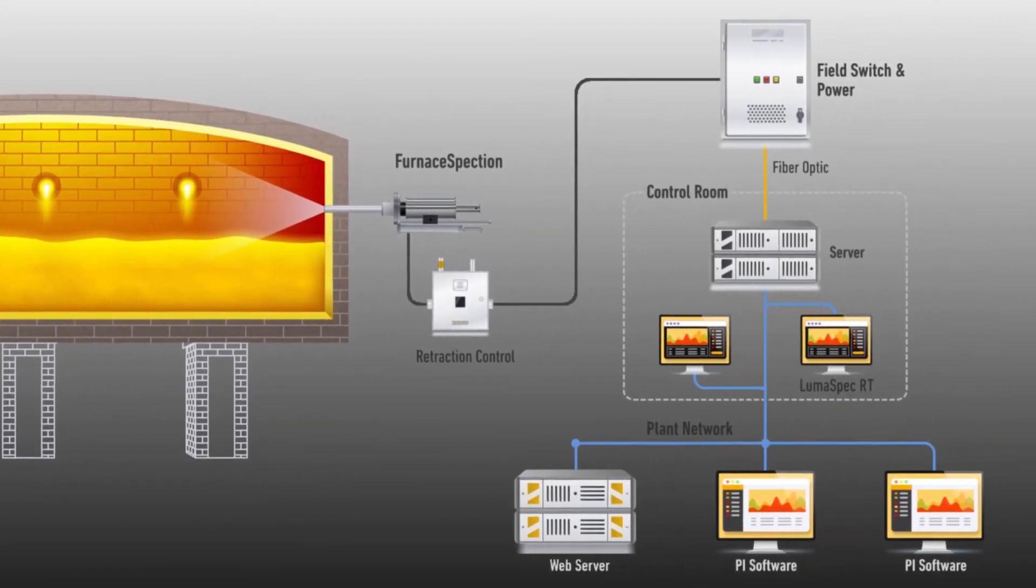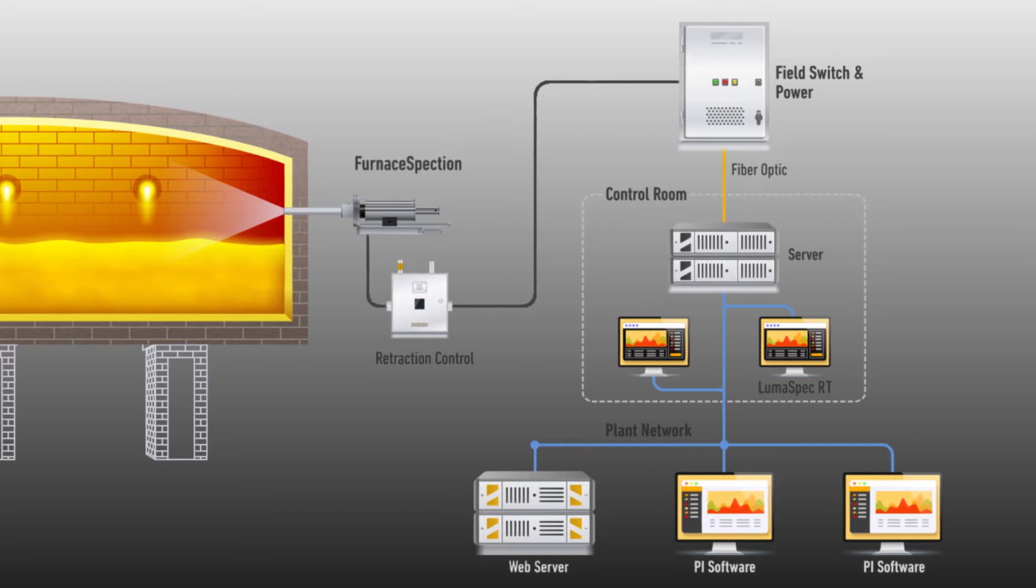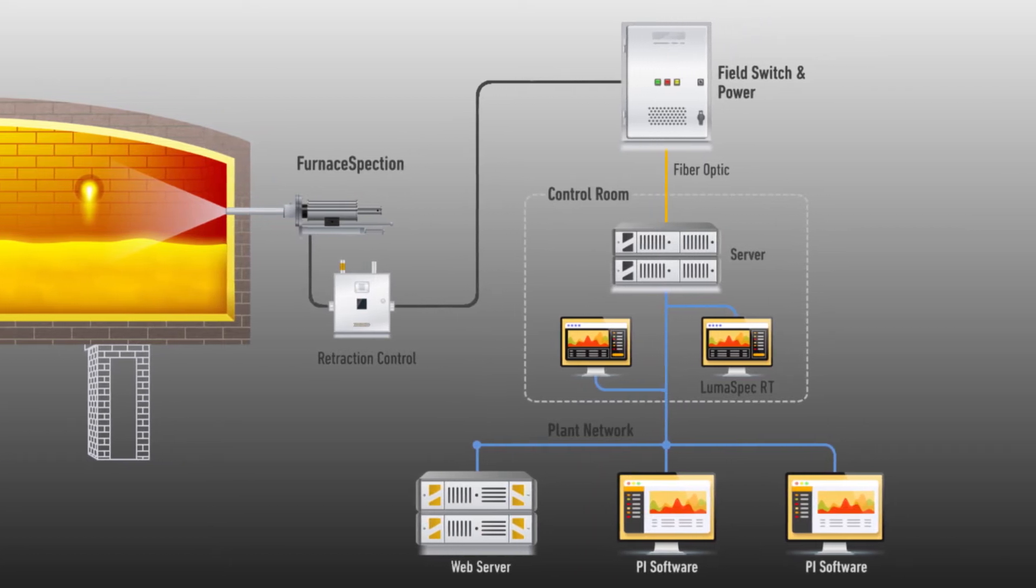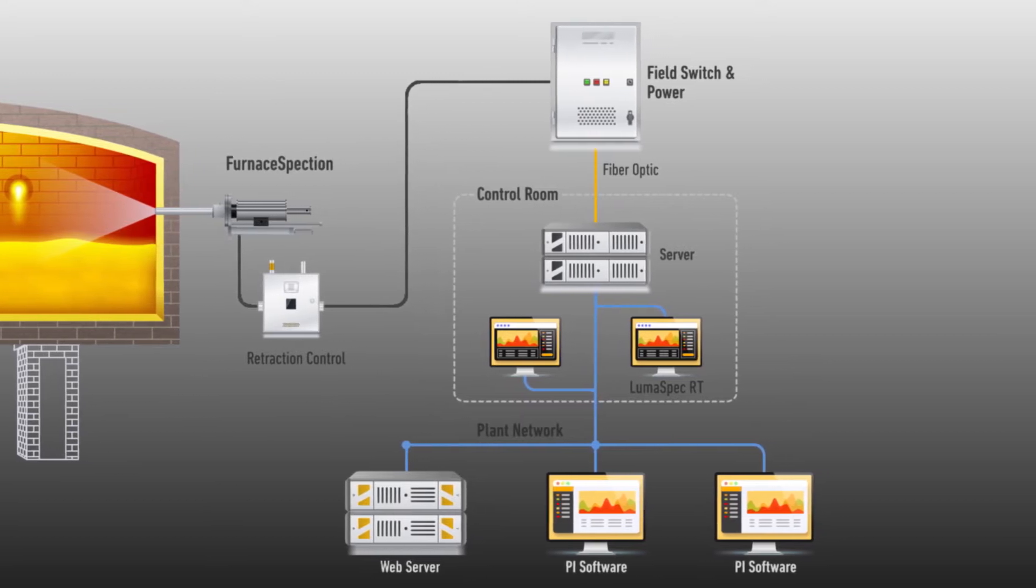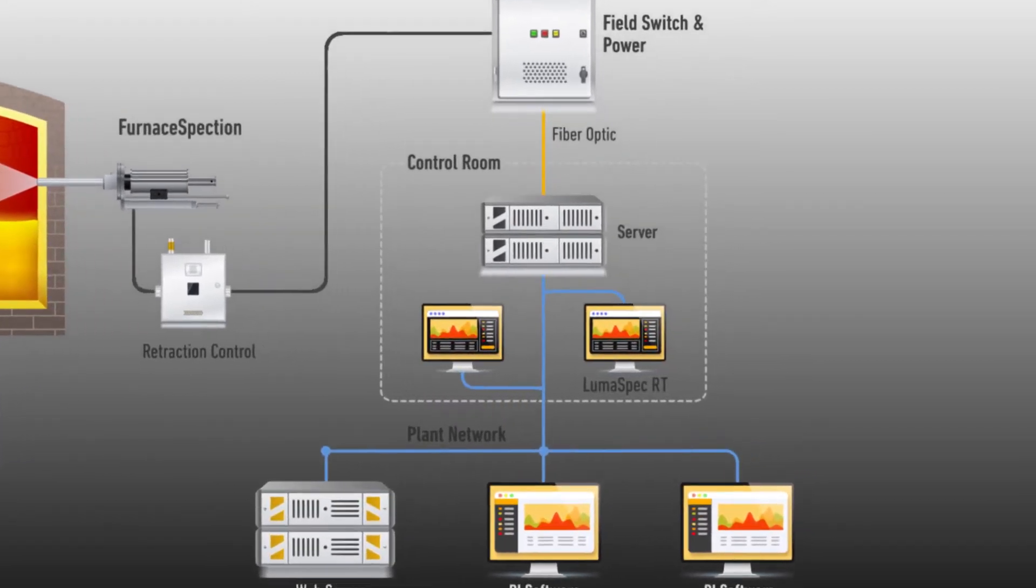Furnishspection also comes with advanced software for live image streaming analysis and historical trending, outputs to automation and control systems, and for broadcasting to a real-time web server on the plant's local network.